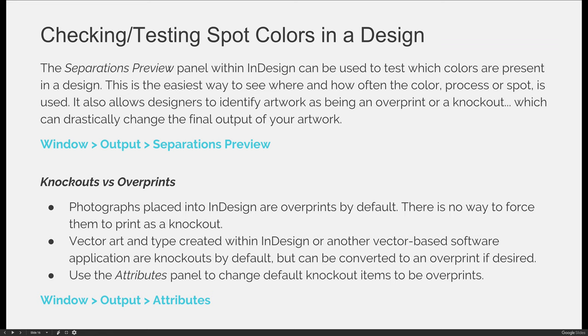It also allows designers to identify artwork as being a knockout or an overprint, which is something we haven't really talked about in the intro to InDesign class just yet — we'll cover that in more detail in this advanced version of the course. Knowing the difference between a knockout and an overprint can drastically impact the final output of your artwork; your artwork will look completely different depending on which setting you use.